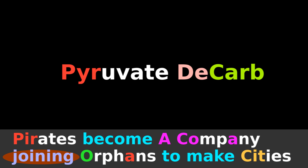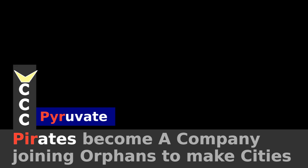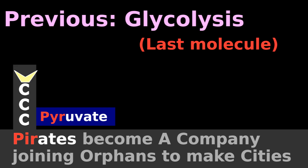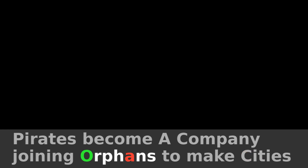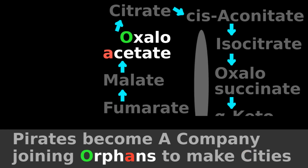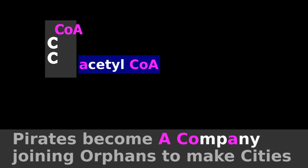Pirates become a company, joining orphans to make cities. Pirates means pyruvate, the last molecule of glycolysis. Cities means citrate, as in the citric acid cycle. Orphans means oxaloacetate, from the citric acid cycle mnemonic orphan cities. And a company means acetyl-CoA.